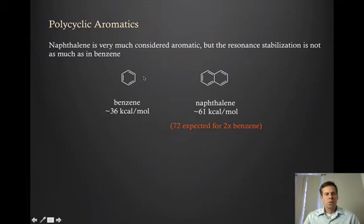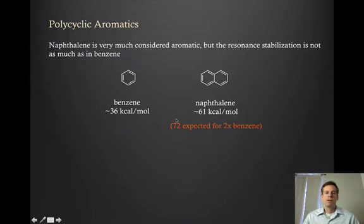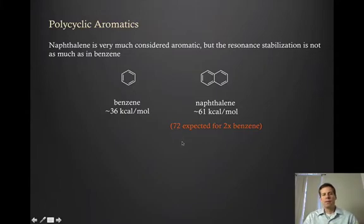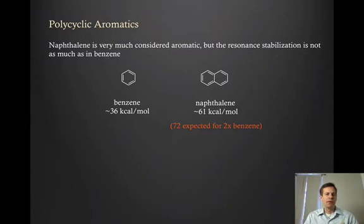If naphthalene were simply two benzene rings fused together, you might expect the resonance stabilization to be simply two times that of benzene — 72 kcal/mol. But if you run the experiment, you find only 61 kcal/mol. That's significantly less than twice benzene. And so that's a general phenomenon: the more rings you have in the aromatic system, the less stabilization per ring you're going to have.